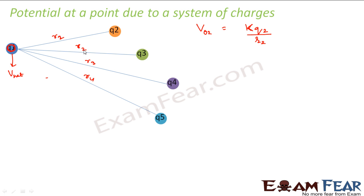This is R2, this is R3, this is R4, and this is R5. Okay, so this becomes similarly potential at point O due to the charge Q3, it becomes KQ3 divided by R3. Similarly potential due to charge Q4, it becomes KQ4 divided by R4 and so on.